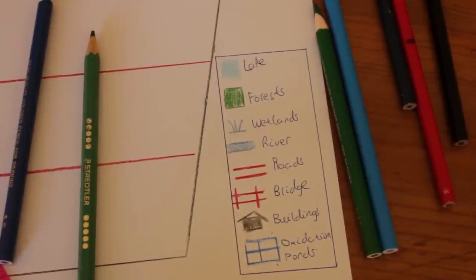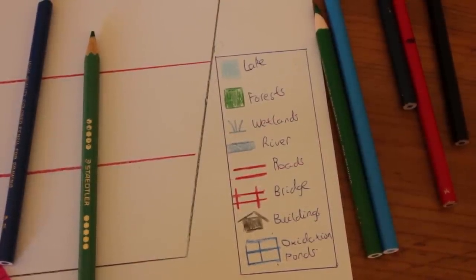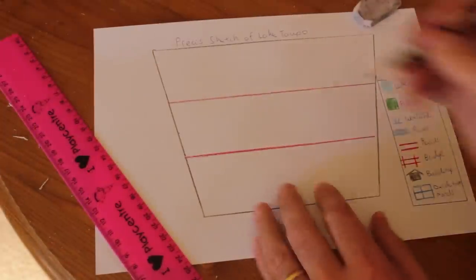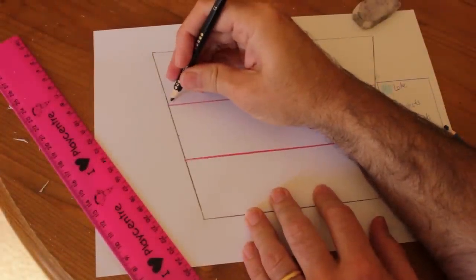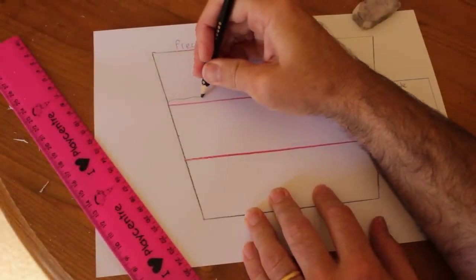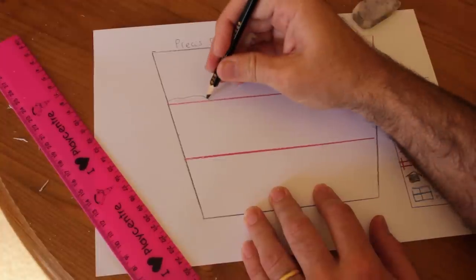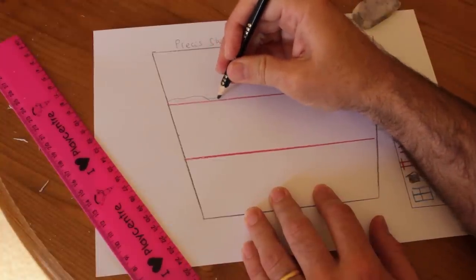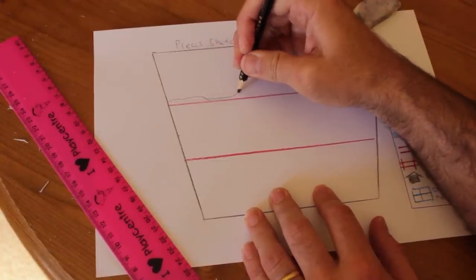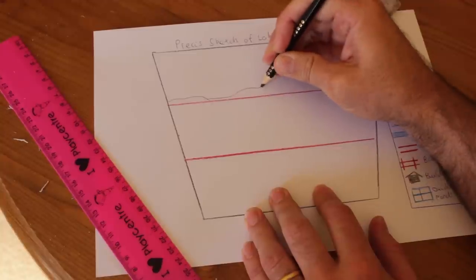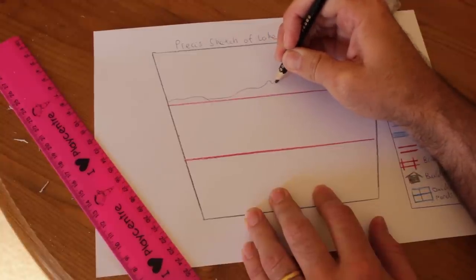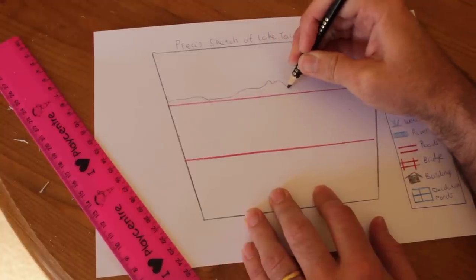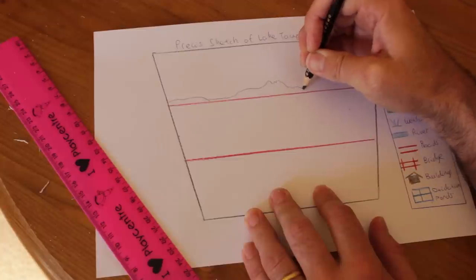Now you can see here my completed key. Now we're ready to go. Now we'll start drawing the outline on the horizon of the mountains behind the lake. We've got Mount Tahara here which I'm drawing, and that is a rhyolitic volcano which is behind the Taupo township.